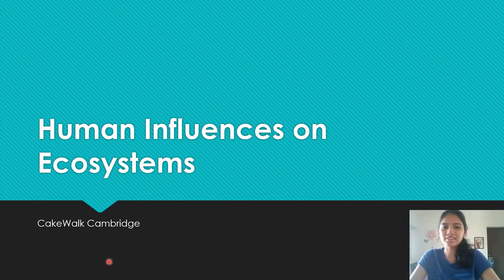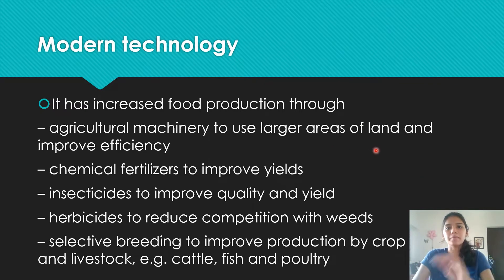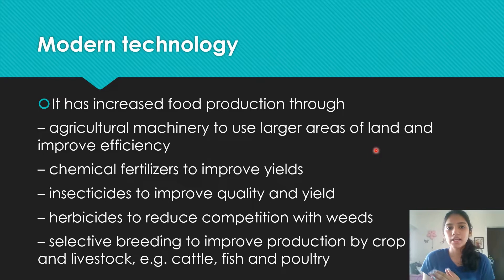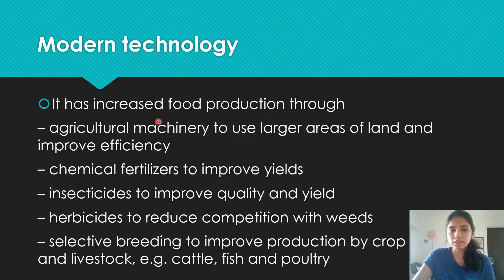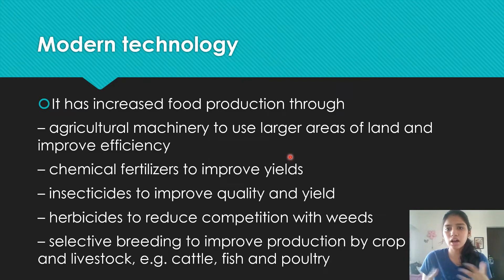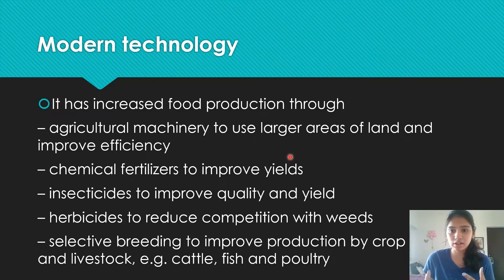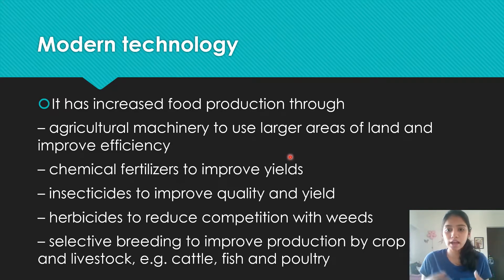The first thing your syllabus says about this chapter is that you should state that modern technology can increase food production by these methods. One is agricultural machinery — that's pretty obvious — used to cover larger areas of land and improve efficiency. Then you have fertilizers, which improve crop yields. Fertilizers are chemicals like NPK fertilizers — nitrogen, phosphorus, potassium — that are added to soils to provide nutrients that plants can absorb.